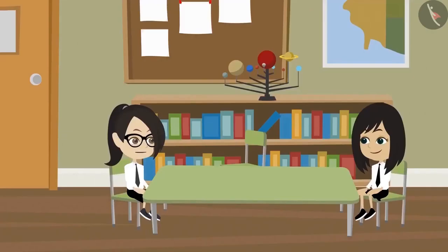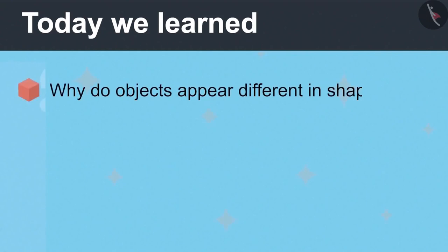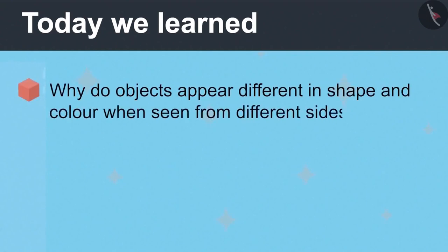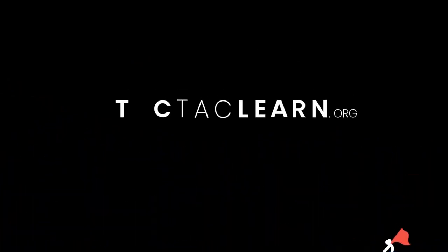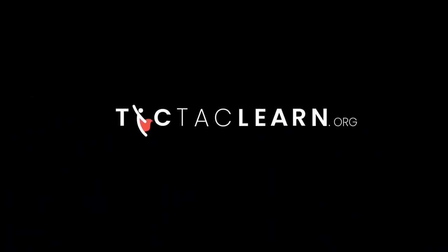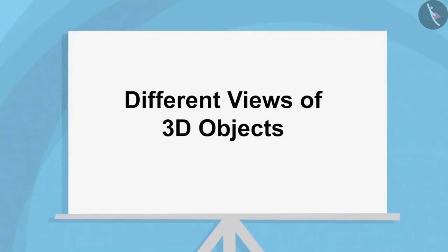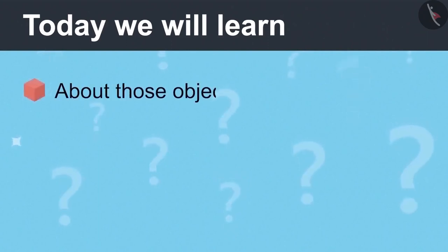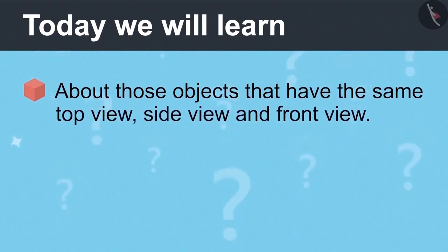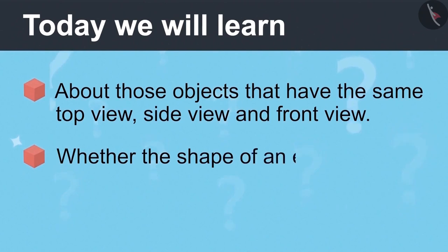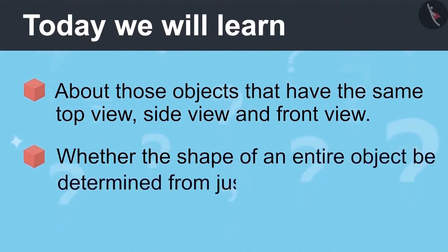We can play it with the whole class by forming groups. Today we learned why objects appear different in shape and color when seen from different sides. Different Views of 3D Objects, Part 3. Today we will learn about those objects that have the same top view, side view and front view, and whether the shape of an entire object can be determined from just three views.